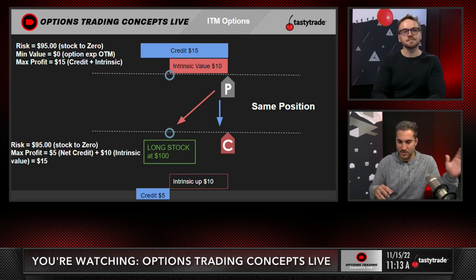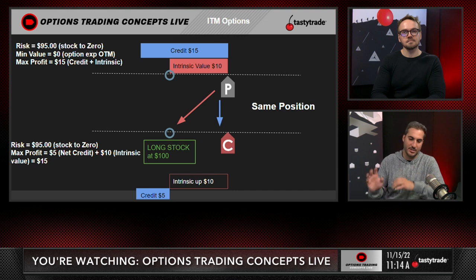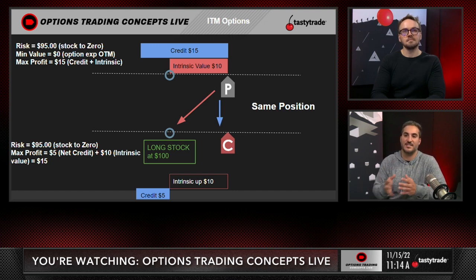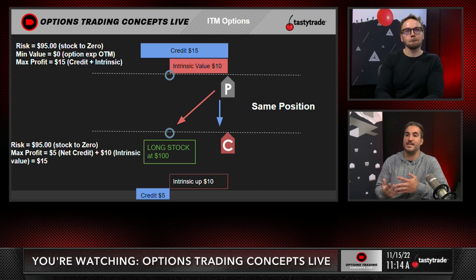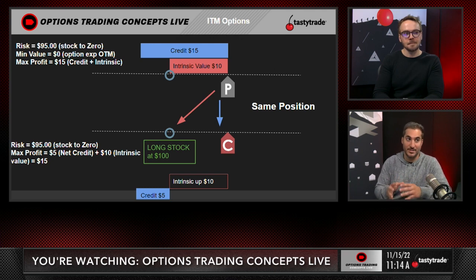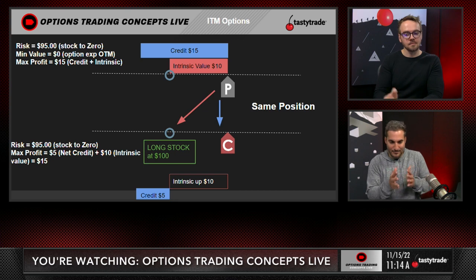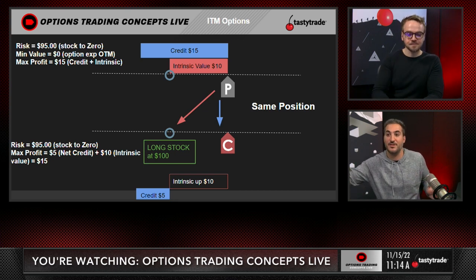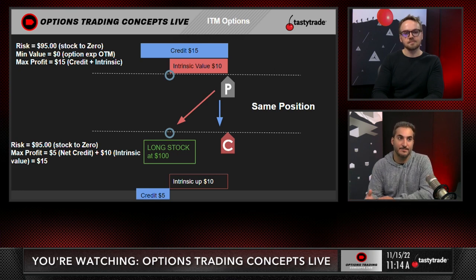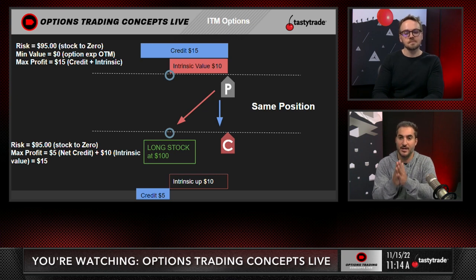In the first example, if the stock is at 100 and you sell the 110 put for $15, you're not getting $15 of pure value — you're getting $5 of extrinsic value. The remaining $10 is intrinsic value that requires a directional move in the stock. Your risk on this position is $95. The minimum value is if the option expires out of the money and you keep the full $15. The intrinsic part of that equation is long stock, and the extrinsic part is the short call — synthetically the same as a covered call.